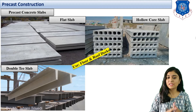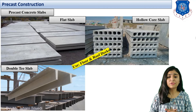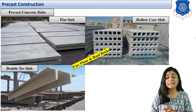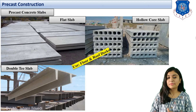The second type is the hollow core slab — a ribbed floor in which hollow spaces are left inside. The major benefit is that it will be lightweight compared to the flat slab, and less construction material will be used. It can be provided in office or school buildings, though the live load bearing capacity will differ from that of a flat slab.